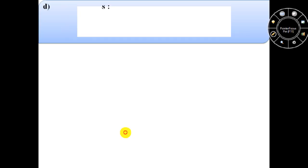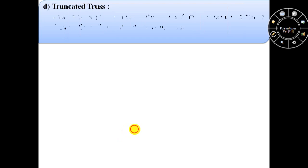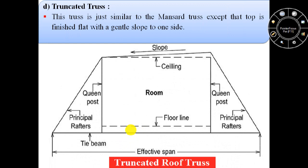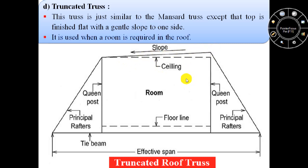The fourth type of truss roof is truncated truss. This truss is just similar to the mansard truss except that the top is finished flat with a gentle slope to one side. This truncated truss is used when a room is required in the roof.